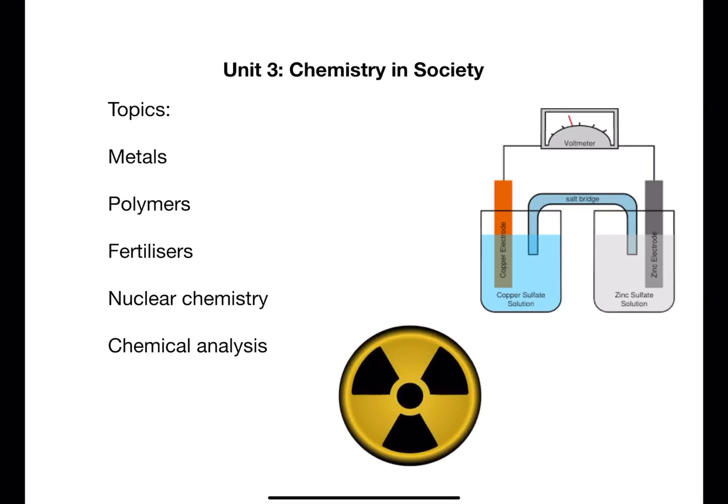Unit 3 is called Chemistry and Society. This unit brings together some of the things you've learned about and puts them into the context of everyday life and applications. The metals topic looks at structures and reactions of metals. It goes on to look at more detailed reactions such as redox reactions involved in electrochemical cells.